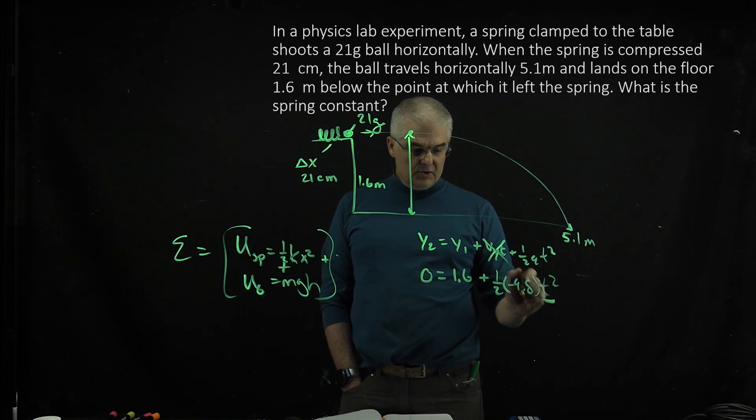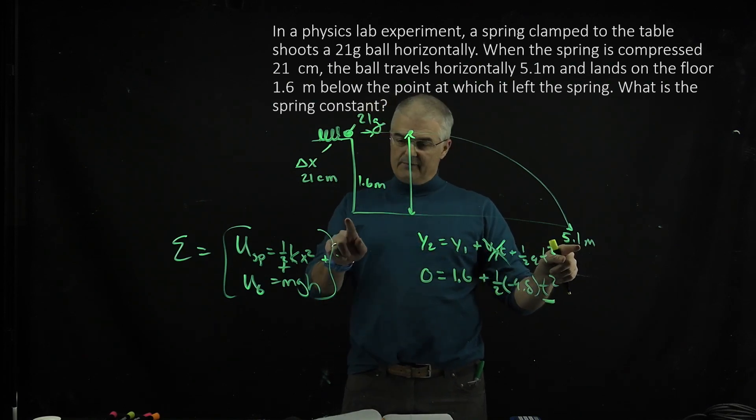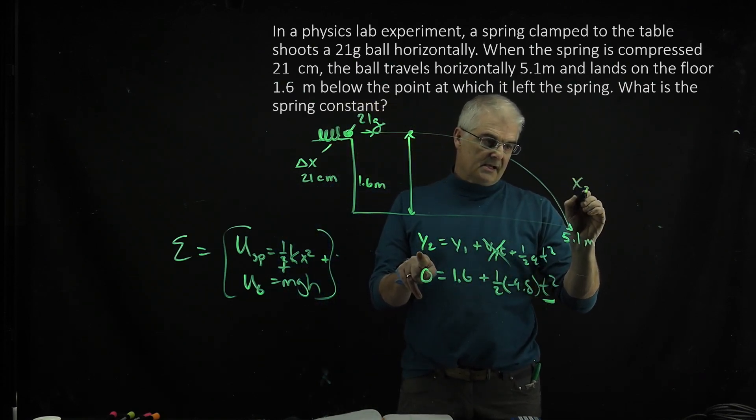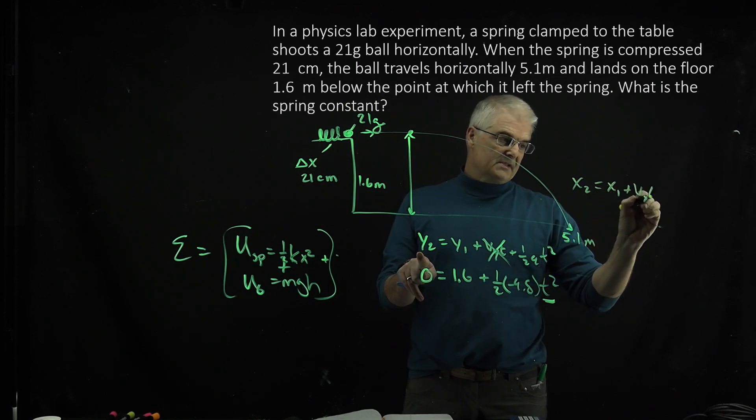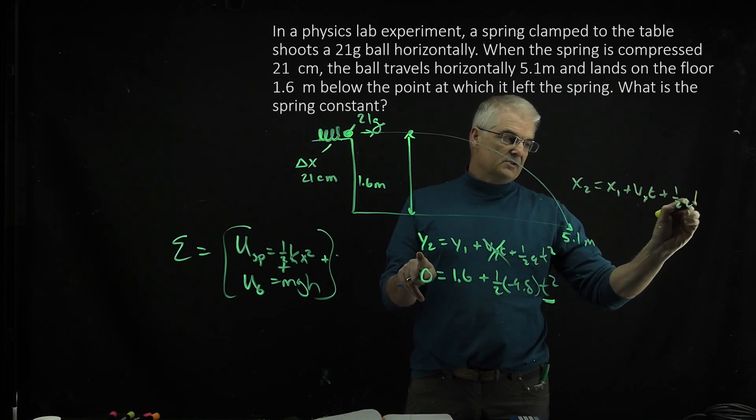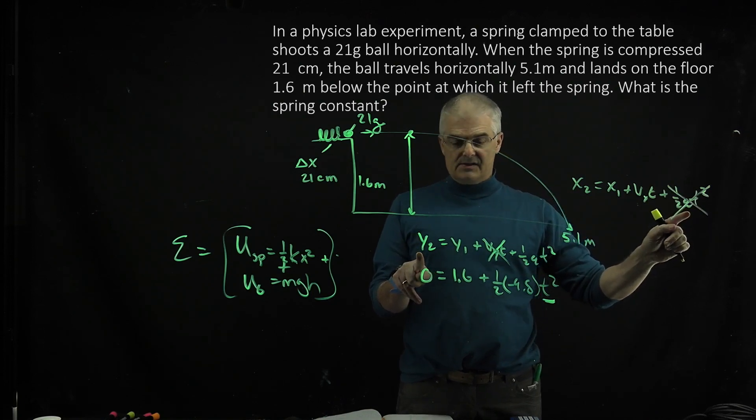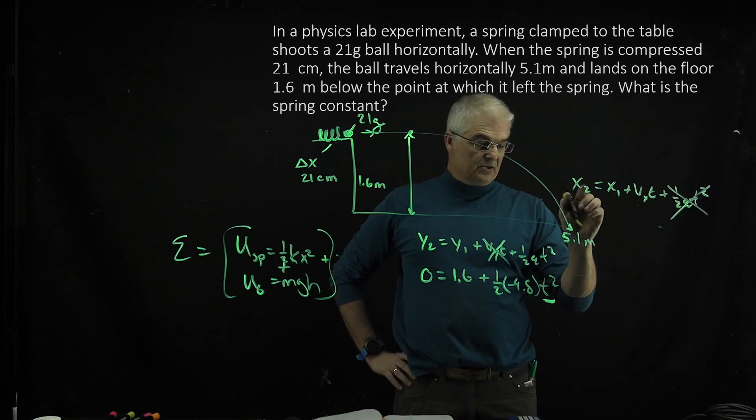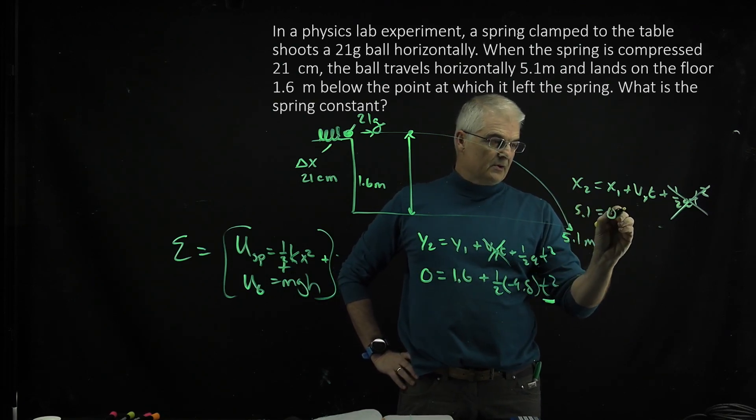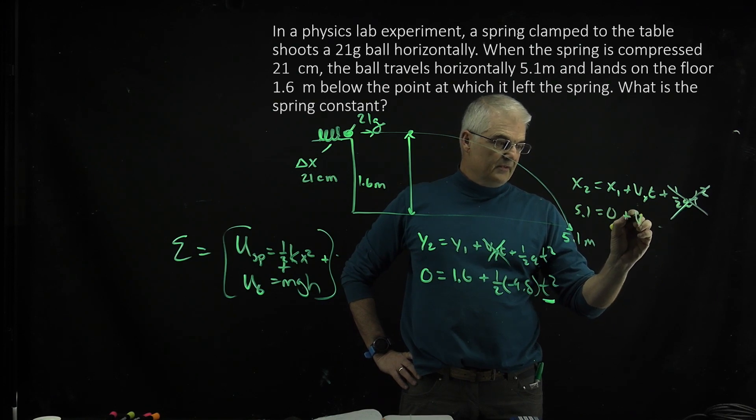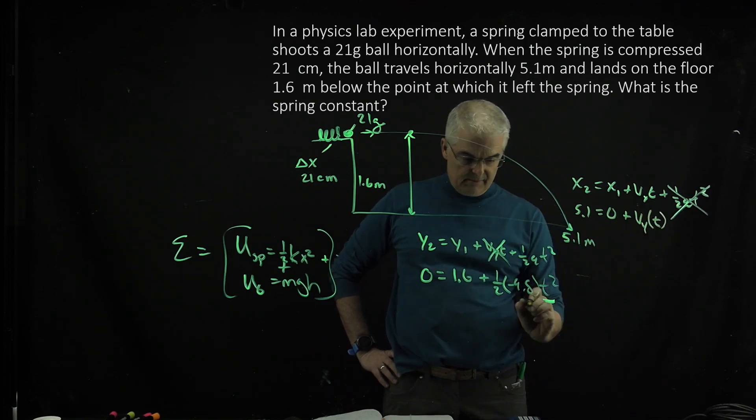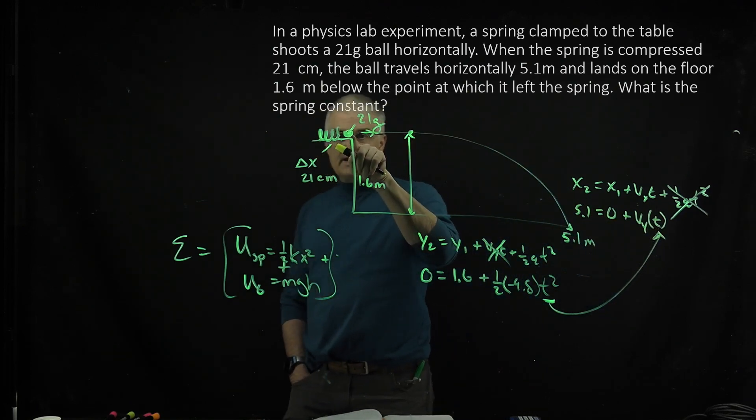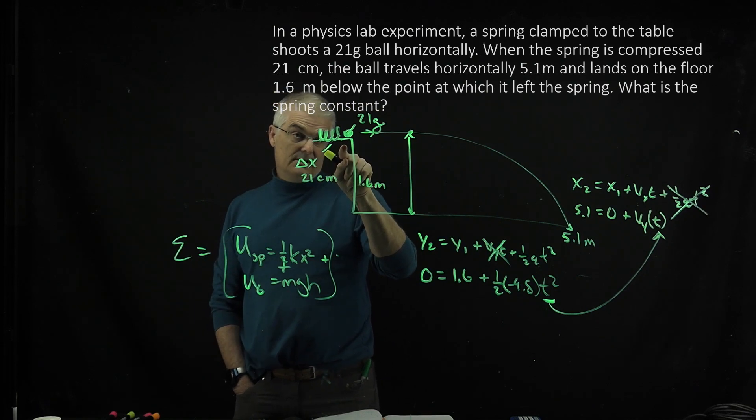you can then say if I know it traveled 5.1 meters, I can use the x equation: x₂ = x₁ + vₓt + 1/2 at². Remember, in this case, the a is 0 because it has no acceleration in the x, only in the y direction. I know what x₂ is. x₂ is 5.1, and that's 0 + vₓ × t. Now, this t is going to be the t that you get from the previous equation, and that will be the velocity that it has here. Does that make sense?